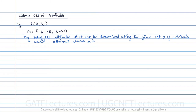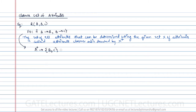The attribute closure is denoted by X+ (X-plus). For example, what is the closure of attribute A? That means we are trying to find A+, i.e., using A, what attributes can we determine? A determines B is already given, so with A I can determine B. Since B determines C, by transitivity A can also determine C. A can also determine itself (trivial). Therefore, the closure of A is {A, B, C}.